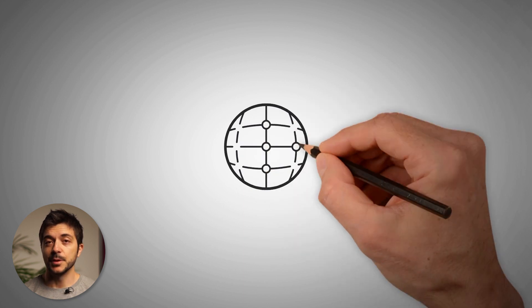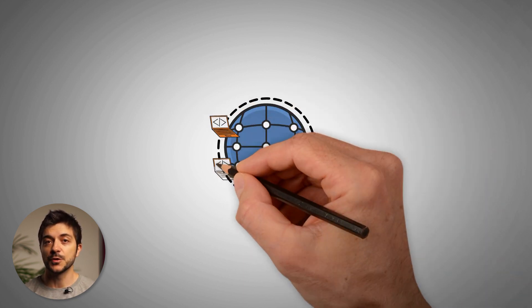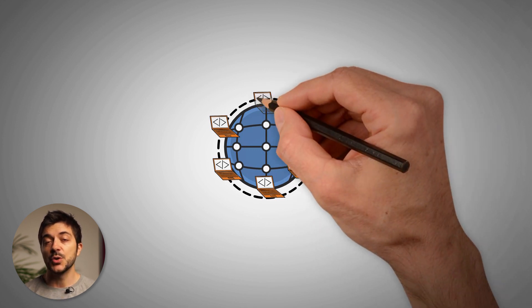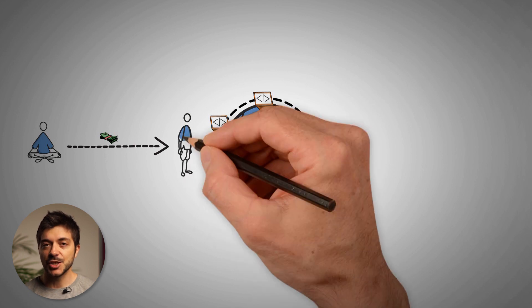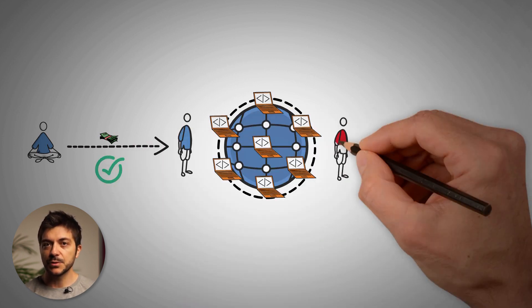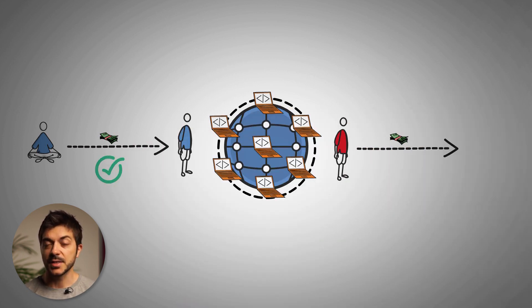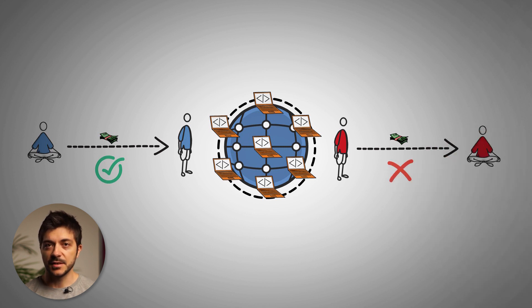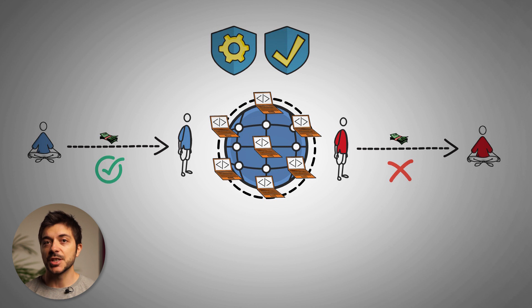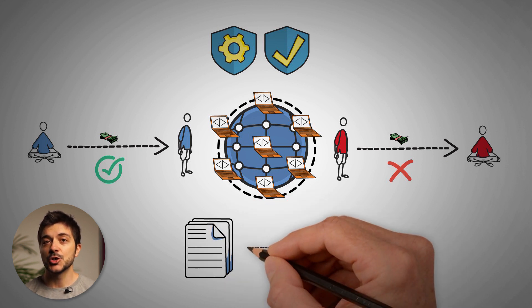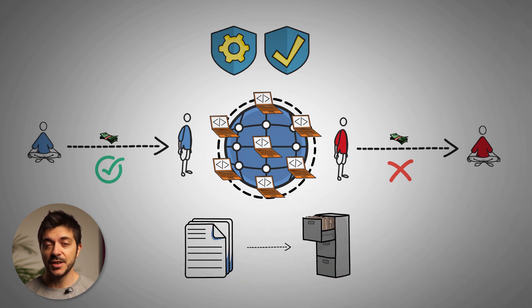To put this simply blockchain technology is a decentralized system or a network with thousands of computers which are distributed all over the globe and their purpose is to record information of transactions going through this network, approve the correct ones and block the incorrect ones. The biggest value of this system is that you cannot change, hack or cheat it because all the transactions are transparent and you can see the history of all of them that ever existed on the network.